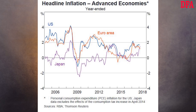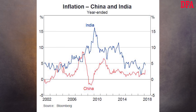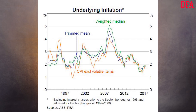Our first chart is headline inflation in advanced economies, where we see that inflation is still sitting below the typical target band of two to three percent in the USA, the euro area and Japan. However, in two of the most populous countries, China and India, inflation is higher, with India close to five percent from a high of 17 percent in 2010. Inflation in Australia is still sitting below the two percent lower bound of the RBA's two to three percent target range on both trimmed mean — their preferred measure — and weighted mean basis.